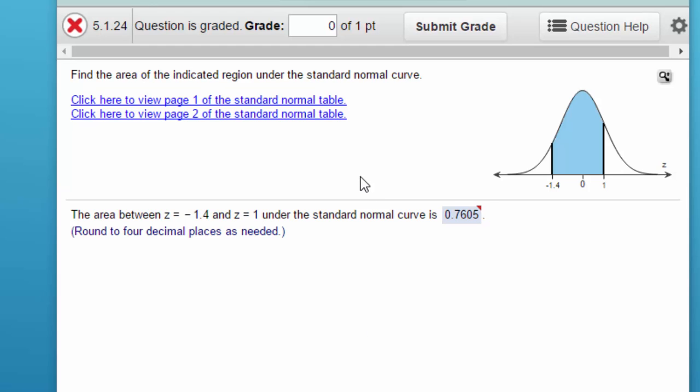The problem is that you need to find the area between z of minus 1.4 and z of plus 1 on the standard normal curve. Now of course you can use the standard normal tables and you need to know how to do that, but once you do, try using StatCrunch.